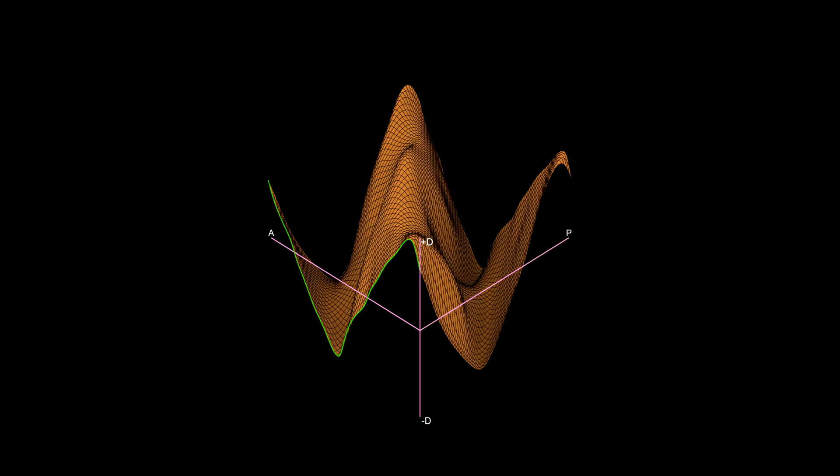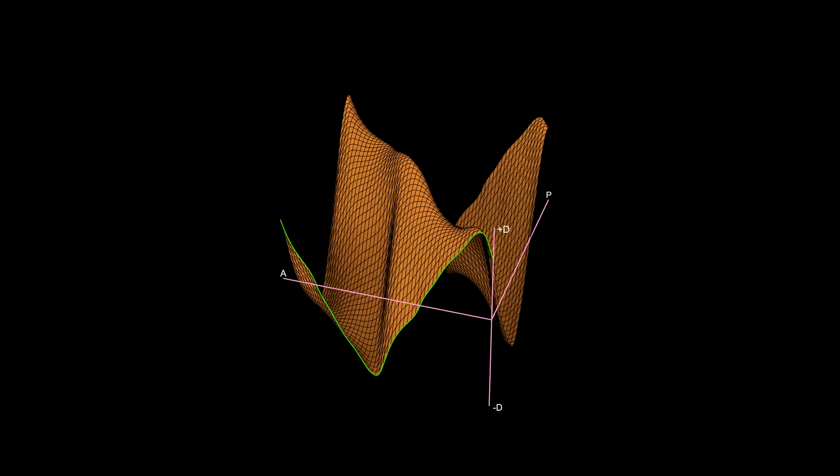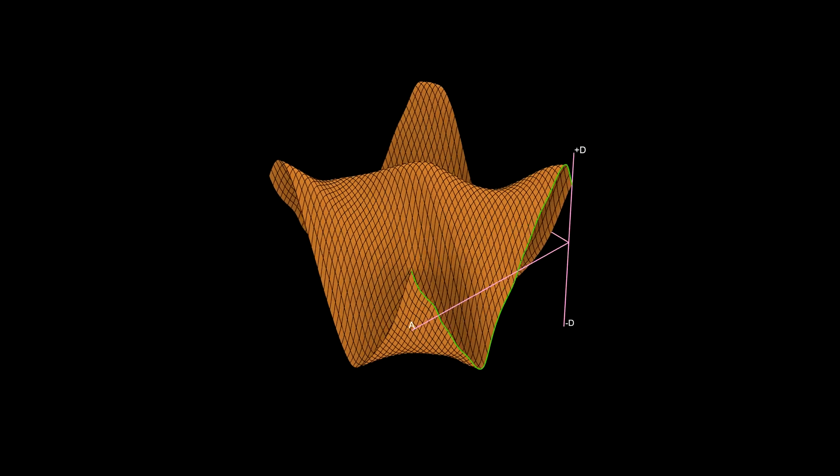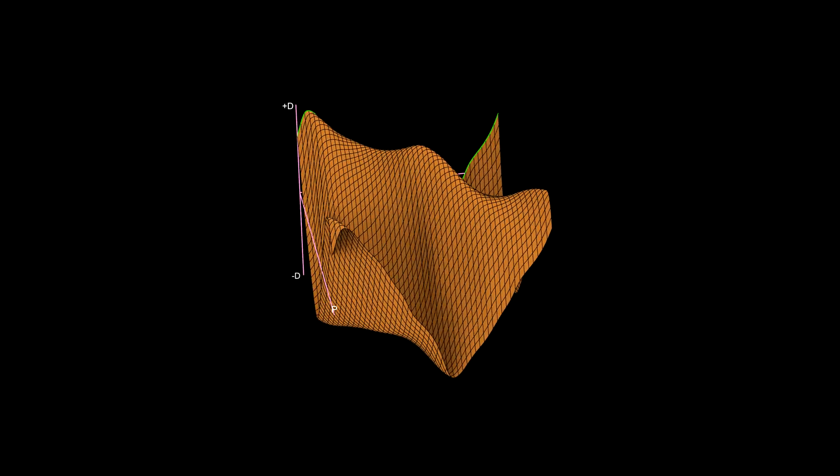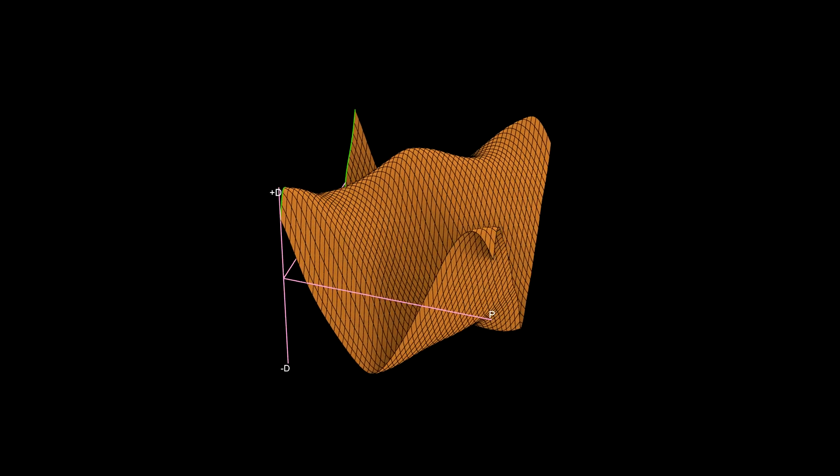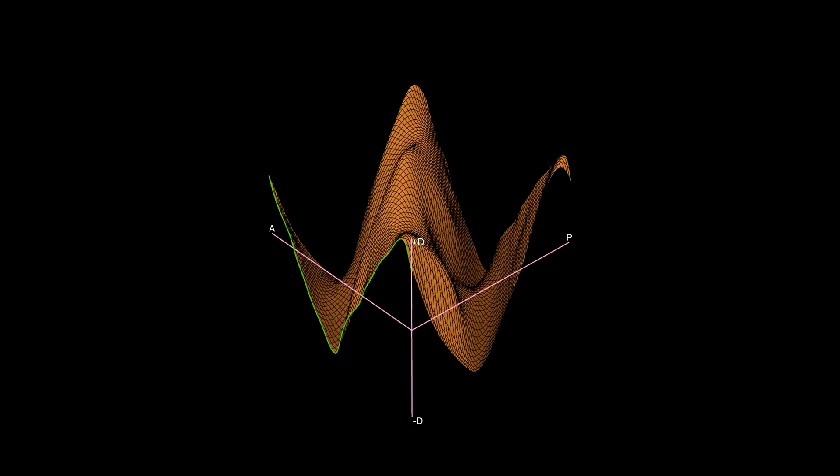This surface exists in a special coordinate system containing axis A, which is the angle between mentioned vectors, axis D, which is distance from starting point to intersection point, and axis P, which represents a parameter or position of the starting point on the curve.